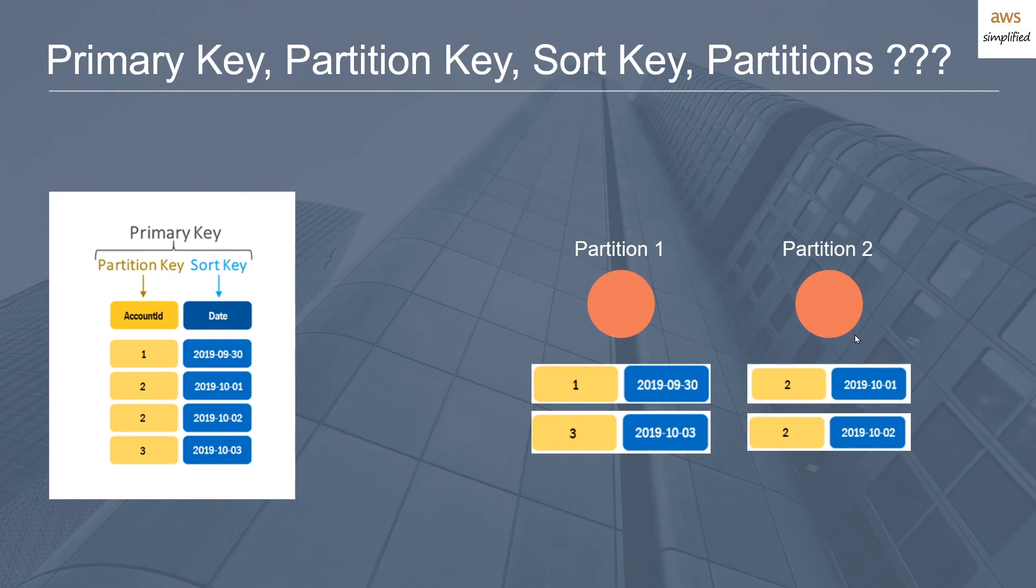Now recall when you provision read and write capacity on a DynamoDB table, it splits the allocated capacity across your partitions. So if you provision 400 total read capacity units and you have two partitions, each partition will be allocated with 200 capacity to use each. And that's what we're saying here. Partition 1 is 200 and partition 2 is 200. So let's say a burst of requests comes in for account ID 2. Half your capacity is pre-allocated to the partition that doesn't have that value on it.